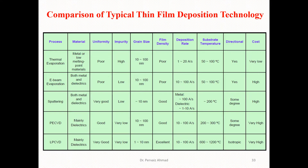In this table we have a comparison of typical thin film deposition technologies. The techniques listed are: thermal evaporation, e-beam evaporation, sputtering, plasma-enhanced chemical vapor deposition (PECVD), and low-pressure chemical vapor deposition (LPCVD). For thermal evaporation, the materials utilized are metals or low melting point materials. Uniformity is poor, impurity is high, and grain size normally ranges from 10 to 100 nanometers.